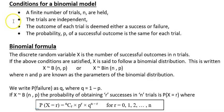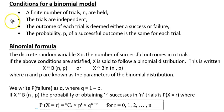The trials are independent — so if somebody goes into the shop and buys something, that has no impact on somebody else buying something. The outcome of each trial is deemed a success or failure — you buy something or you don't. And the probability of the successful outcome is the same for each trial.